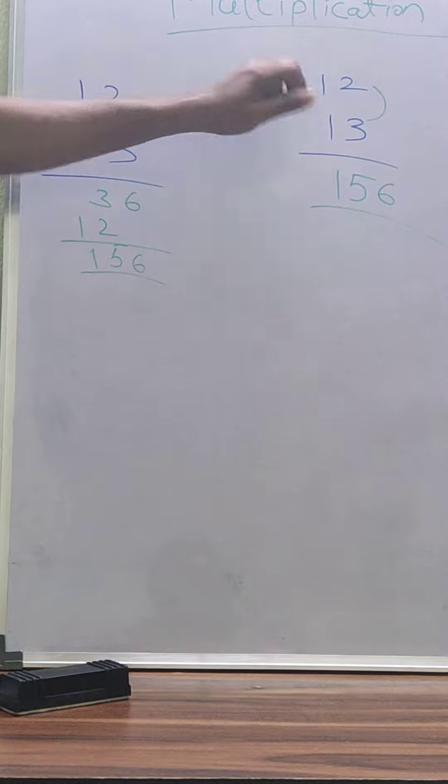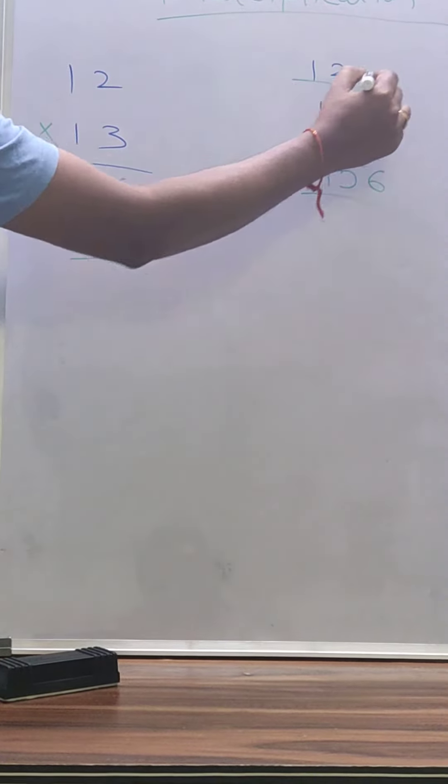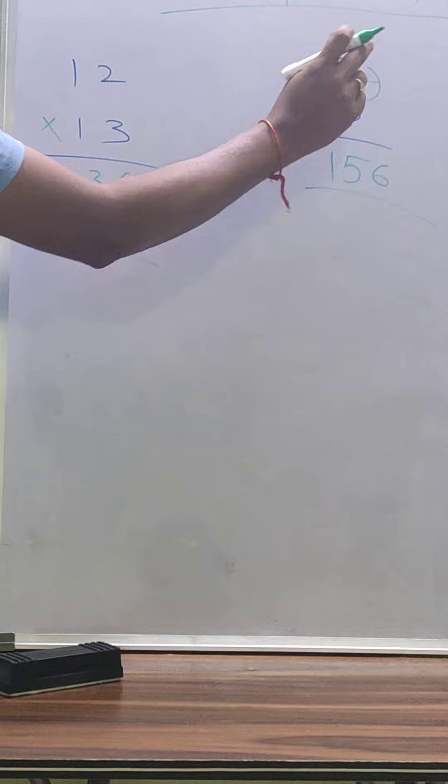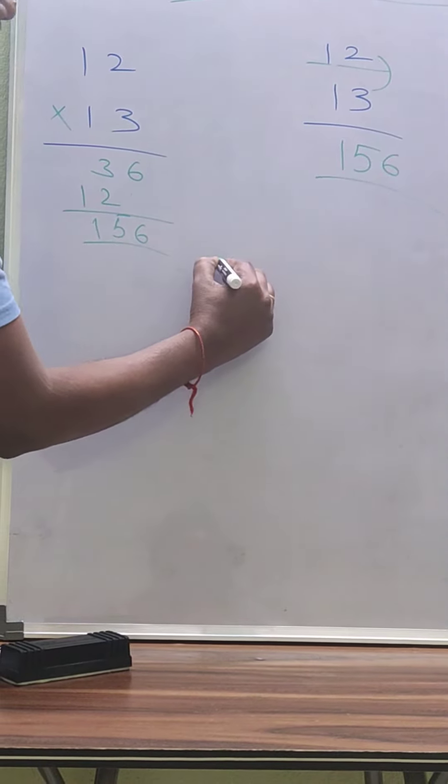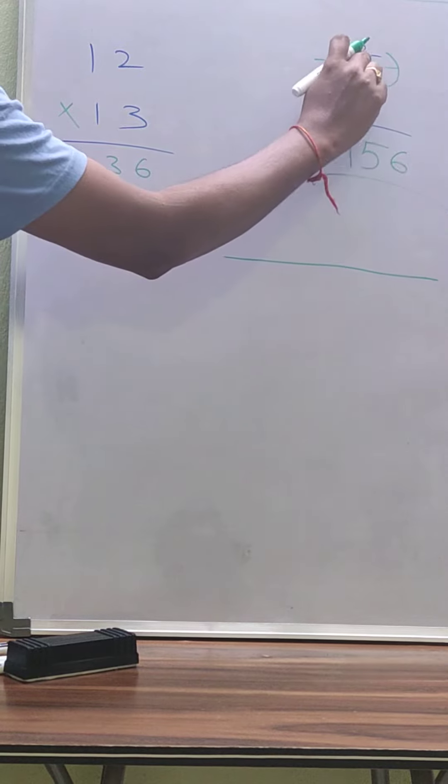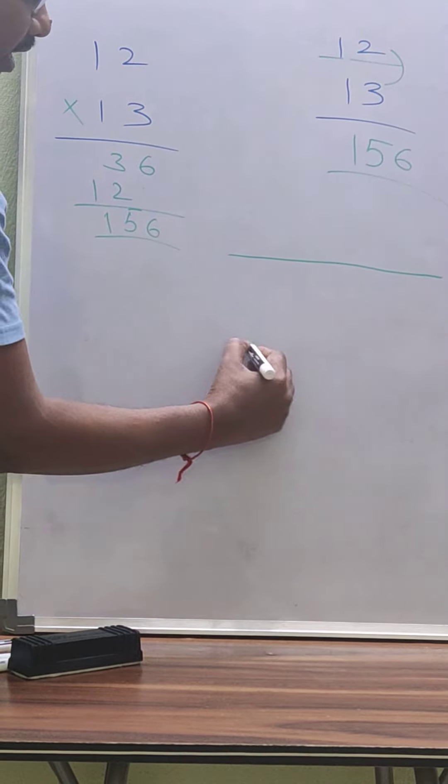Other shortcut method. Here 12. 12 means 1 and 2. 12 means 1, draw 1 line horizontal. Here 2, draw 2 lines horizontal.